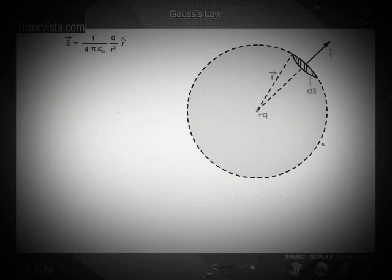Now, let's imagine a small area, Ds, on the surface of the sphere. The electric flux is now given by D phi E is equal to vector E dot vector ds.